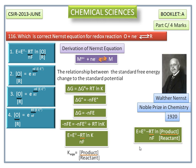If we want plus sign here, we have to invert this product and reactant. We get E equals E° plus RT divided by nF, ln concentration of reactant divided by product.